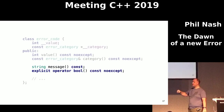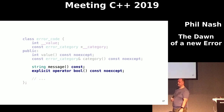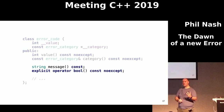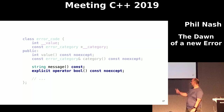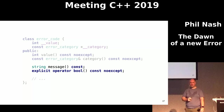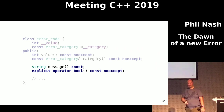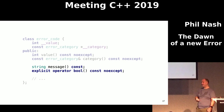Going back to error_code itself: the Boolean operator is a bit problematic. We've got an error type — it seems like you could just test it with the Boolean operator to see whether it's an error or not. Unfortunately, all it does is tell you whether the value is zero or not, which may or may not mean the same thing. So don't use that if you do use error_code unless you really know what you're doing — always compare against an actual known error type.